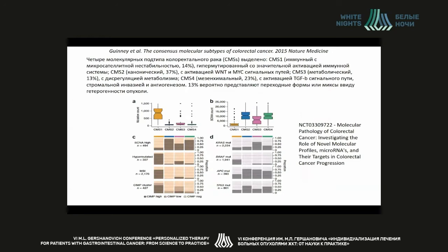Another classification, based on comparison of the full transcriptional profile — the number of all synthesized RNA in cells — was published in 2015. There are four types: CMS1, the immunotype with a high level of MSI; CMS2, with epithelial dysregulation; and others.